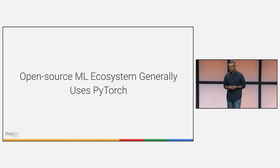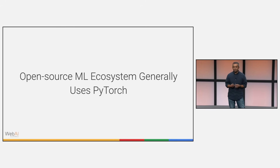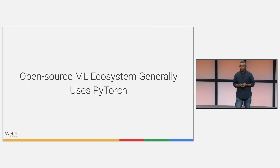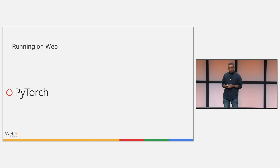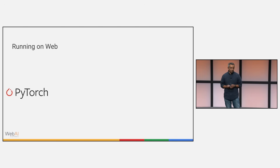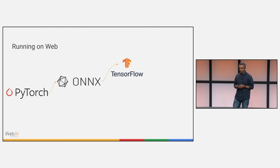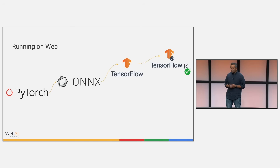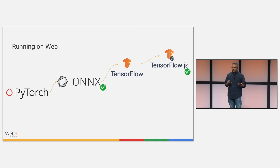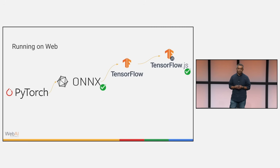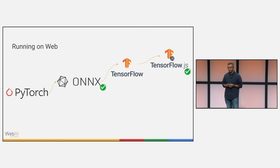A lot of the open source ML ecosystem generally prefers to use PyTorch. That has come to be the more prominent way of running all of these models on device. But the journey to do this isn't always that straightforward — there are many steps. Even when other frameworks like ONNX have tried to simplify this, it's still not that straightforward. It's also critical to remind everyone that the web is one of Google's core platforms, and driving ML innovations on the web is critical for the health of the web ecosystem.